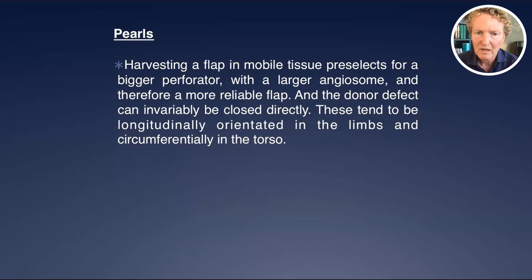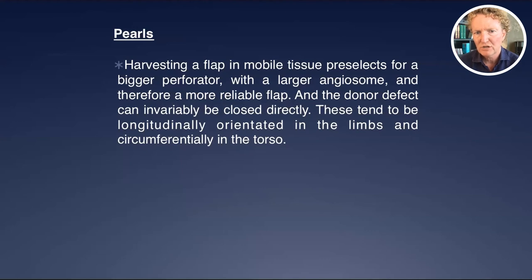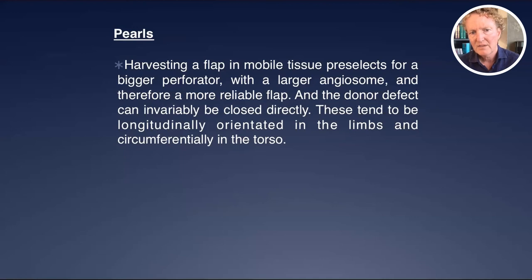The first takeaway point is that harvesting a flap in mobile tissue — that is, over the top of a space — pre-selects for a bigger perforator with a larger angiosome. You want mobile tissue because you'll have individual perforators that are wider apart but each one will be much bigger, giving a much more reliable flap. In the limbs, these flaps are best oriented longitudinally in association with nerves; in the abdomen, circumferentially, following the dermatomal distribution for guidance.